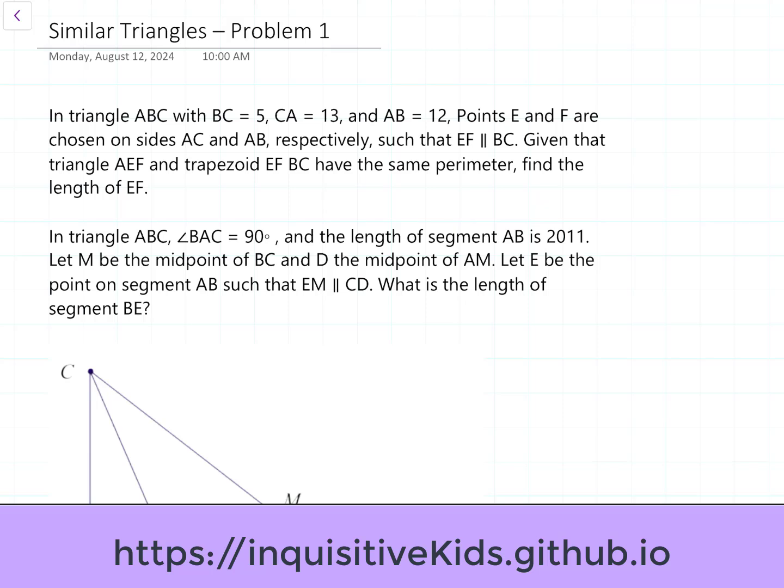In triangle ABC, with BC equal to 5, CA equal to 13, and AB equal to 12, points E and F are chosen on sides AC and AB respectively, such that EF is parallel to BC. Given that triangle AEF and trapezoid EFBC have the same perimeter, find the length of EF.